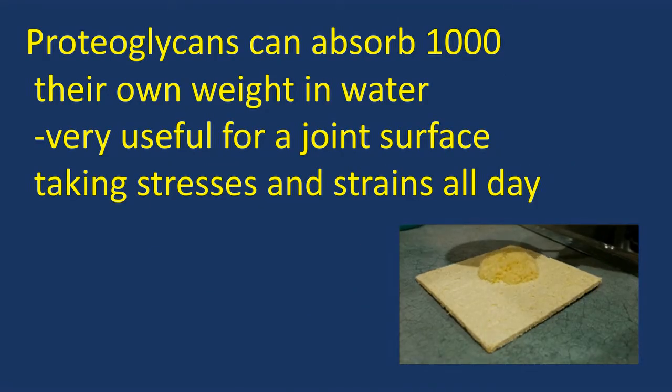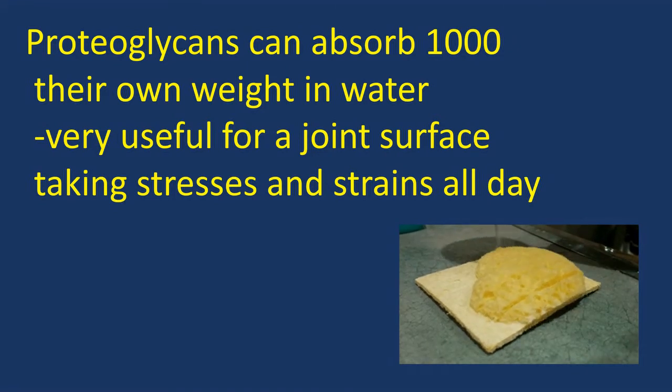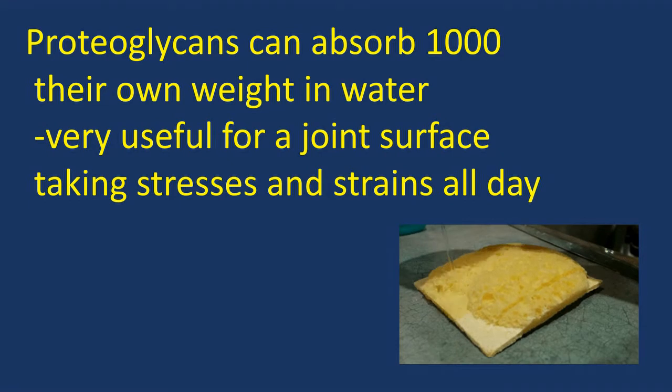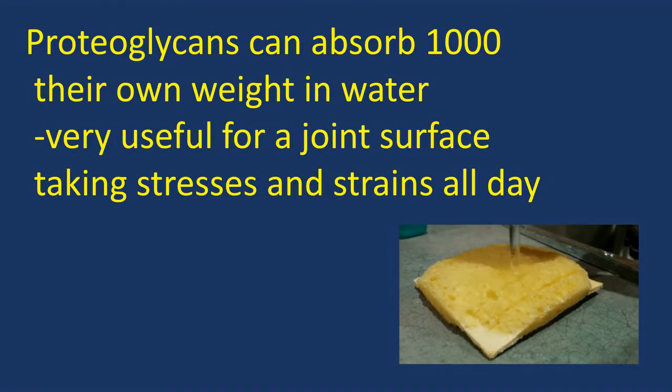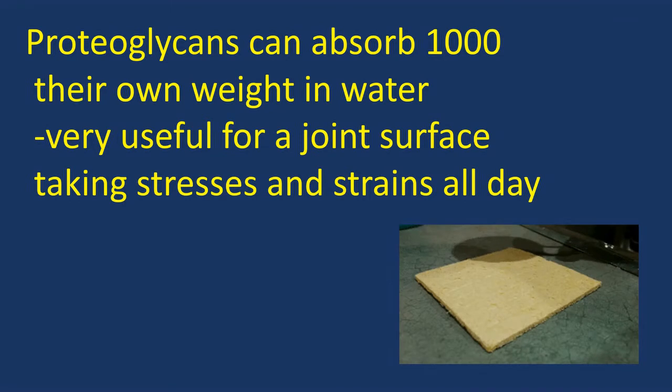Proteoglycans are quite complex, large molecules, and they have the ability to absorb up to a thousand times their own weight in water. That's useful in tissues that need to be hydrated. So the prime example is articular cartilage. One of the side effects of immobility or a lack of movement of a joint or aging is a lack of the ability of these proteoglycans to absorb water. And when the cartilage starts to dry out, it very quickly starts to become osteoarthritic.